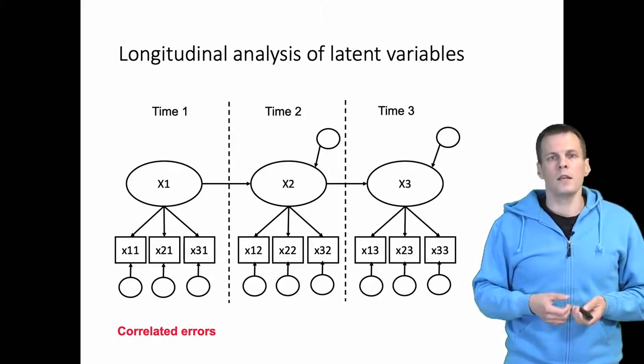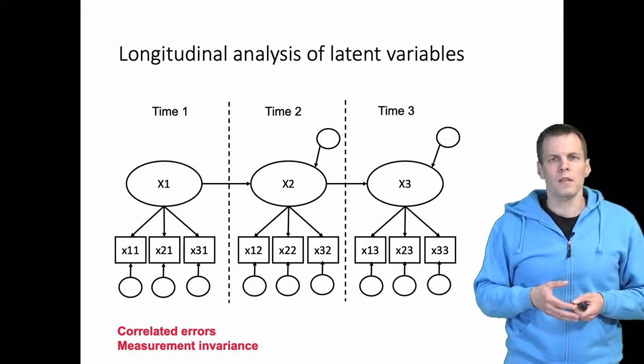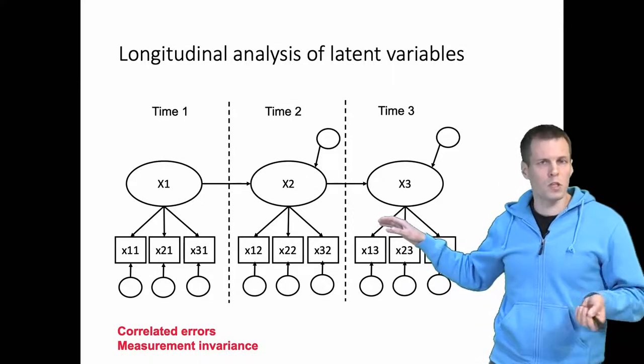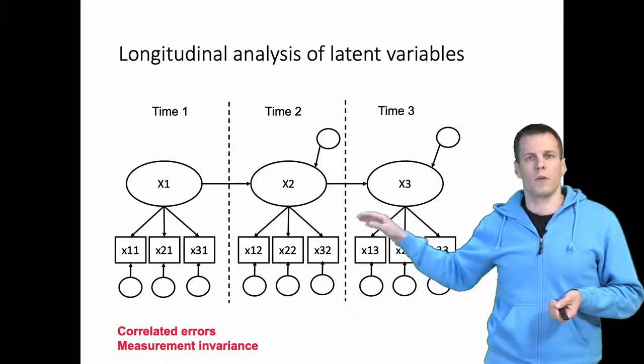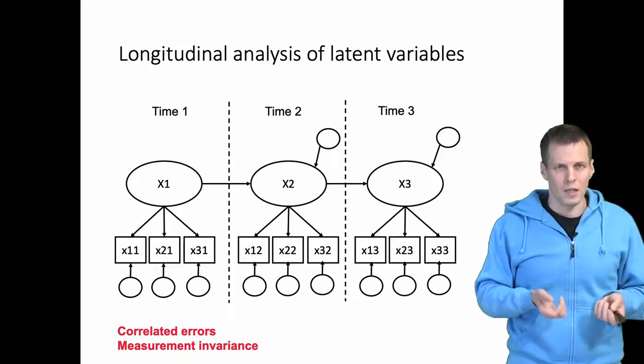Another thing is measurement invariance. Measurement invariance briefly means that your measurement model works the same way, or the measurement process works the same way between x1 and x2 and x2 and x3. This is important because it is possible that the skeptic to our argument says that there is actually no correlation between x1 and x2.